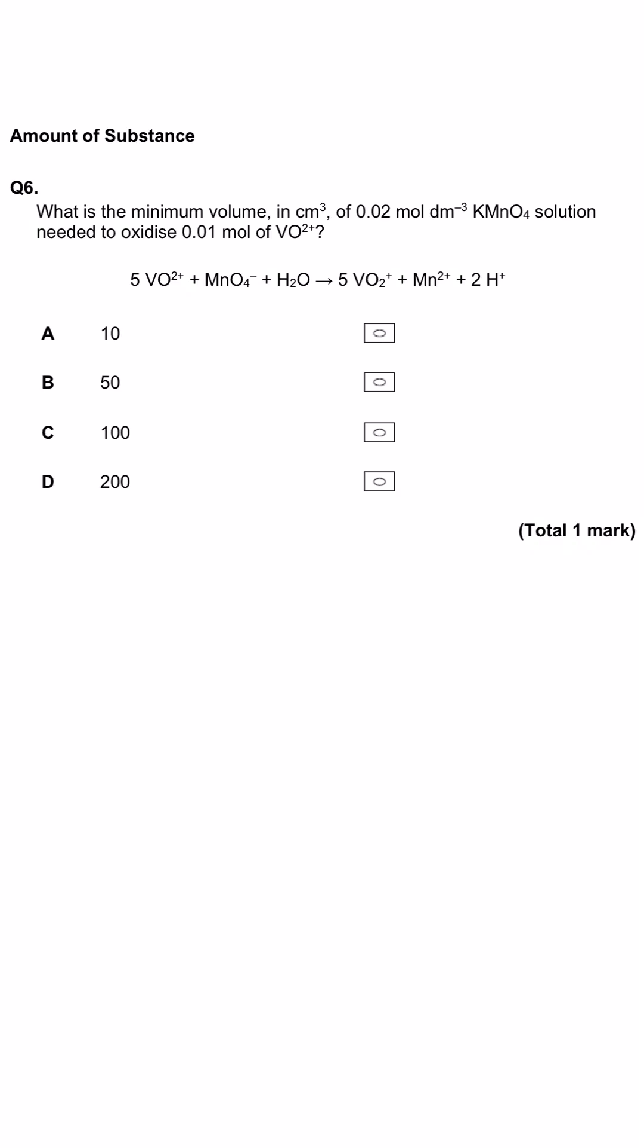This question is asking us what volume of a particular concentration of potassium manganate 7 solution is needed to oxidize a particular number of moles of VO2 plus. We're shown the equation, and it's really important to note that the VO2 plus is present in a 5 to 1 ratio with KMnO4.